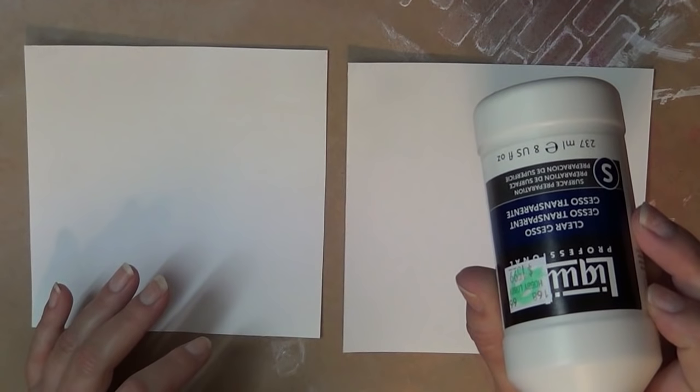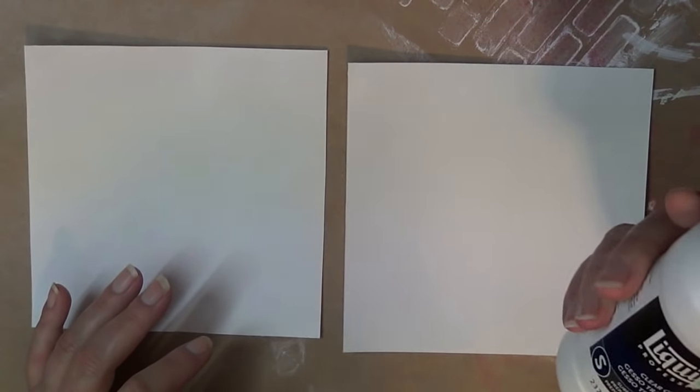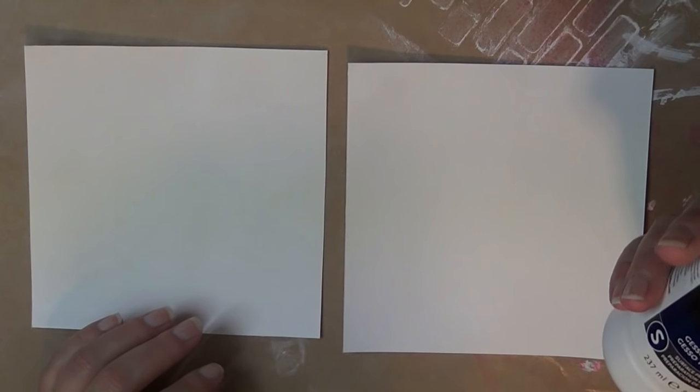I'm using Liquitex Clear Gesso. I just want to see if it will be any different than my normal white gesso. Since it's a white paper, it doesn't really matter.